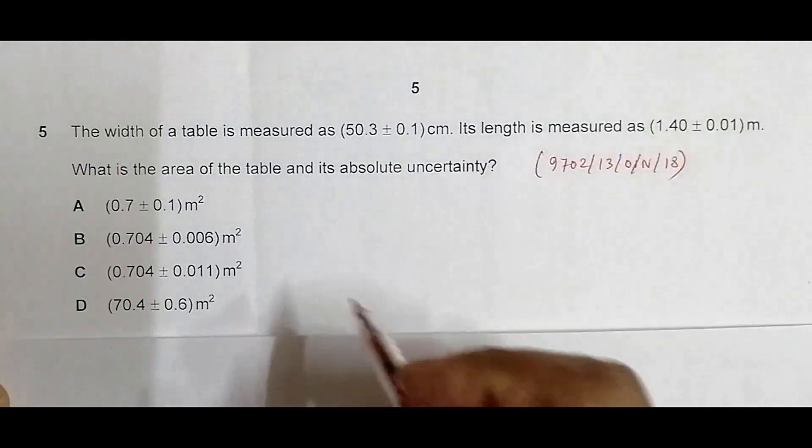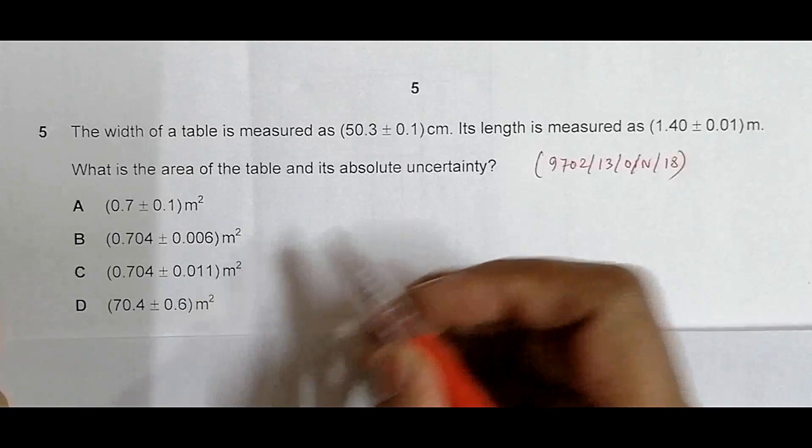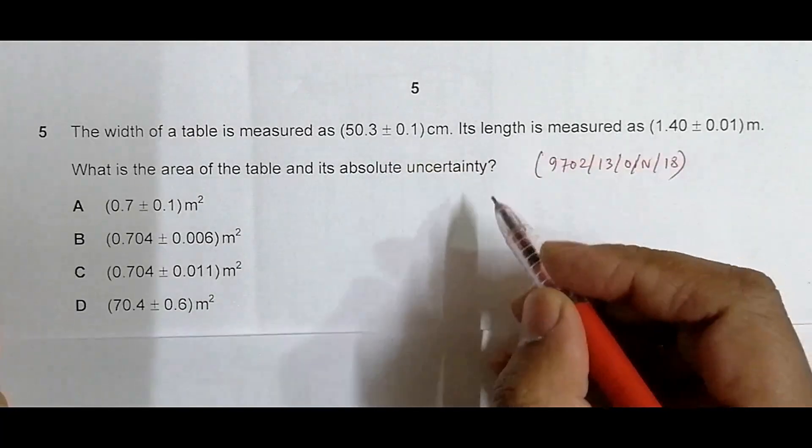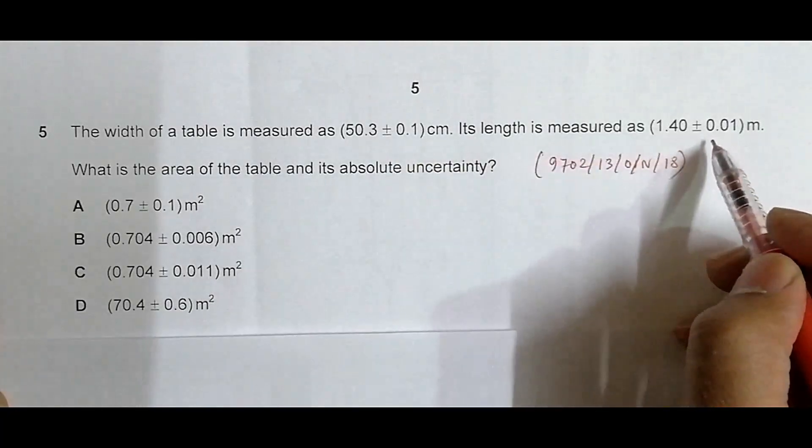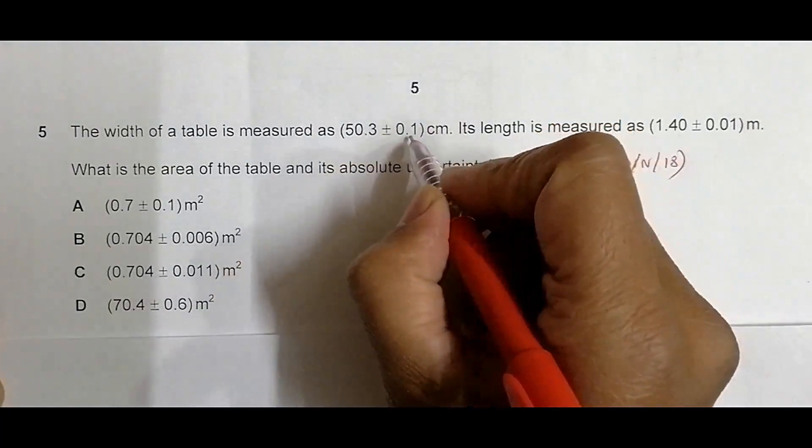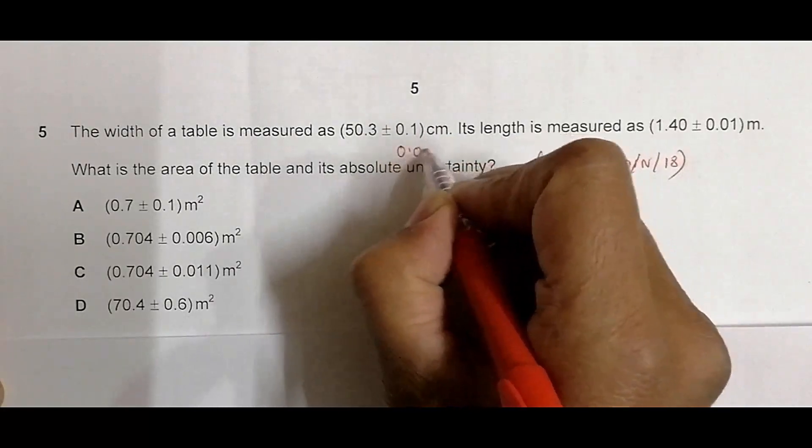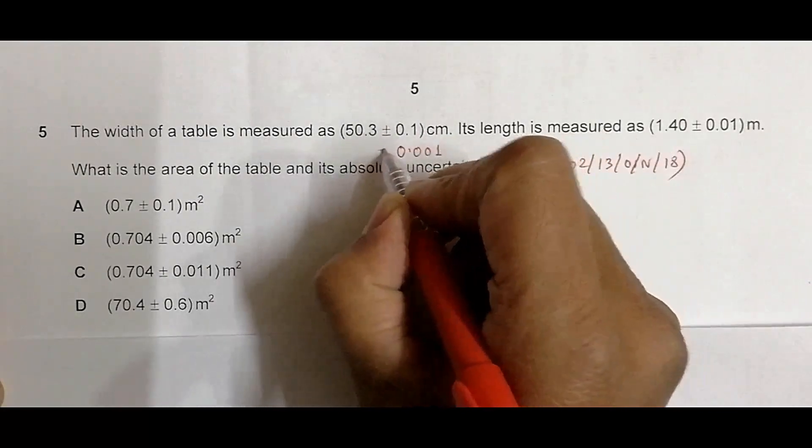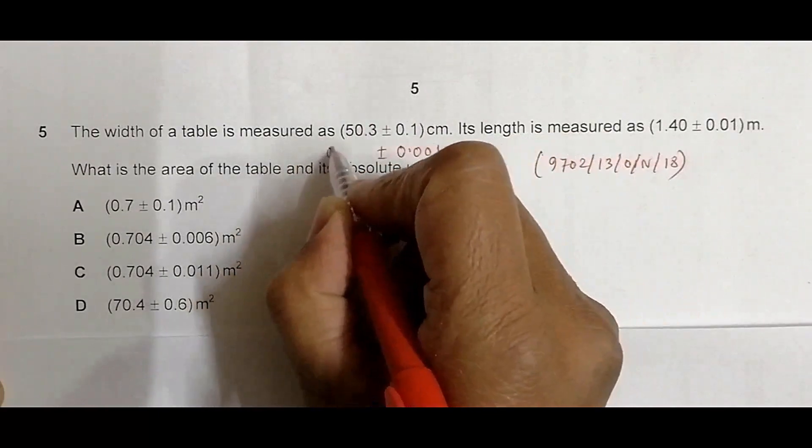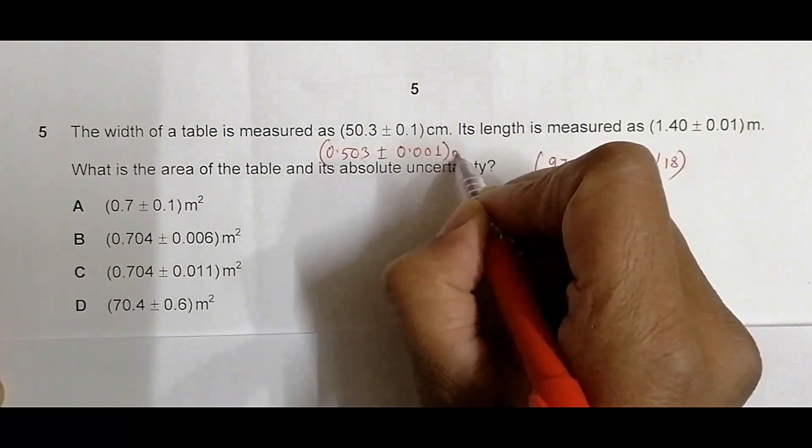First, let's look at answer choices. They're all in meter squared, so I have to change both of these things into meters. This is in meters, it's okay, but this is not in meters so we have to change this. When 0.1 is changed into meters it becomes 0.001, so this becomes 0.503 meters.